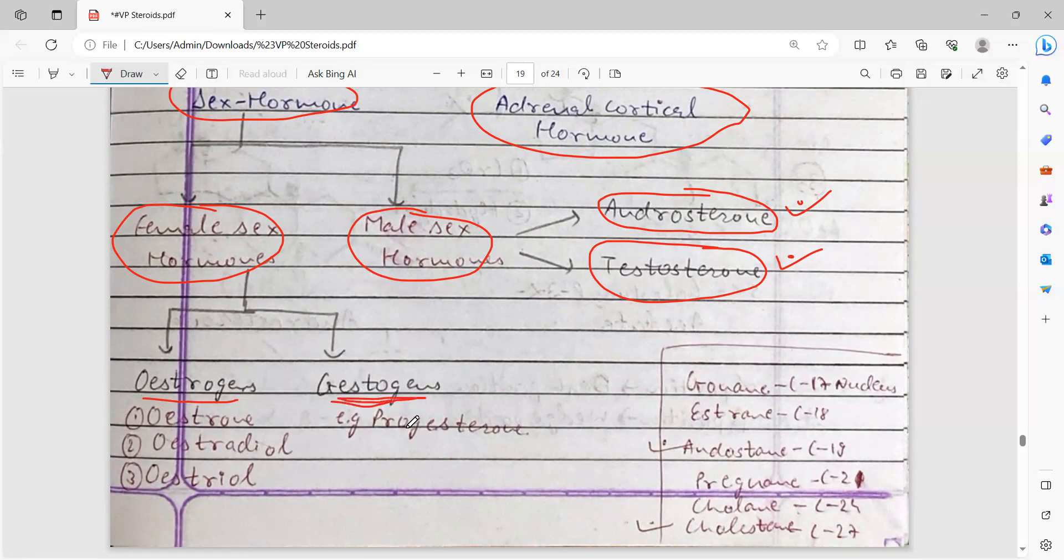For female sex hormones, there are further two classifications: progesterone and estrogens. In estrogens, university exams ask about progesterone and estradiol. Some exams may ask about estrone or estradiol. Mostly you'll see progesterone and estradiol covered. Adrenal cortical hormones and testosterone are also commonly covered in university exams.